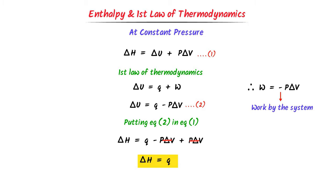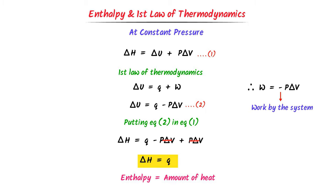Therefore, enthalpy ΔH equals the amount of heat at constant pressure — denoted qp. Remember that ΔH equals the amount of heat at constant pressure.